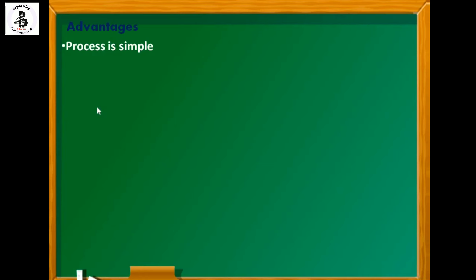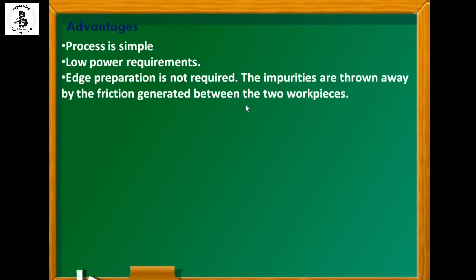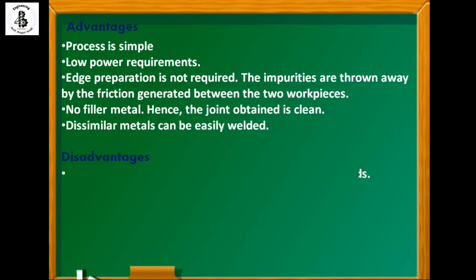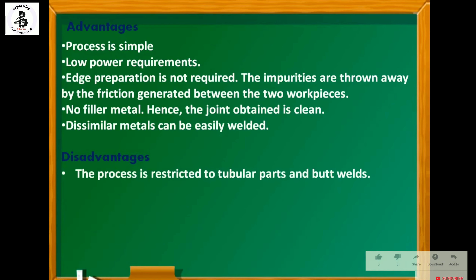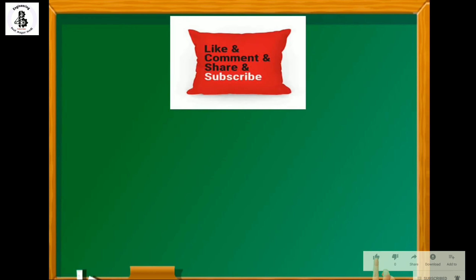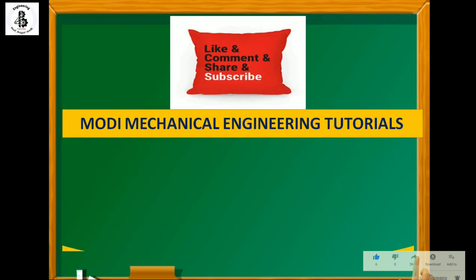Some advantages of this process: it is very simple, has low power requirements, no edge preparation is required, impurities are thrown away by the friction between the two workpieces, no filler metal is used resulting in a clean joint, and dissimilar metals can be easily welded. A disadvantage is that the process is restricted to tubular parts or butt welds only. Subscribe and share for more mechanical engineering tutorials — thank you for watching.